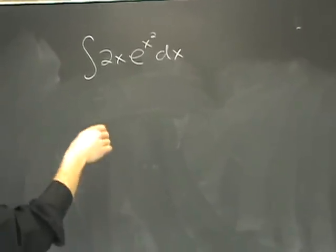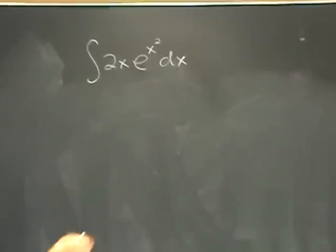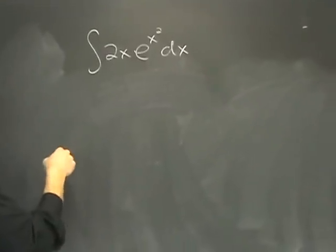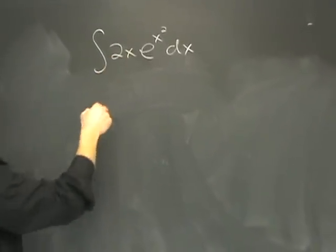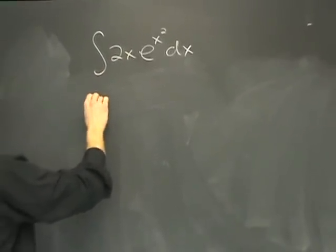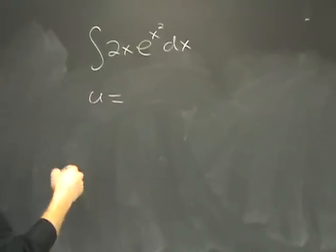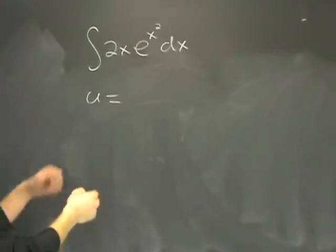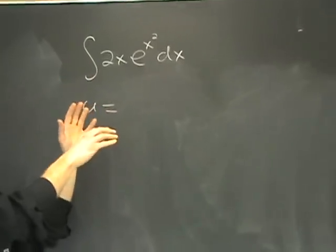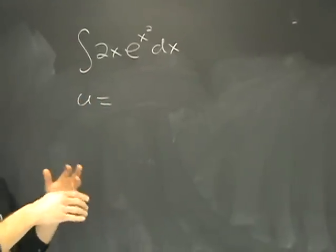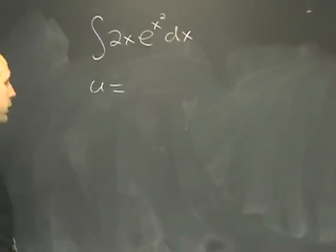I'm going to show you how it's done and then I'll show you why I chose to do it the way that I did. It starts with: you have to pick something inside of the integrand and let that be u — let u equal something. The hope is that you want to change out all the x's and rewrite them in terms of u, hopefully coming up with a simpler integral in the process.